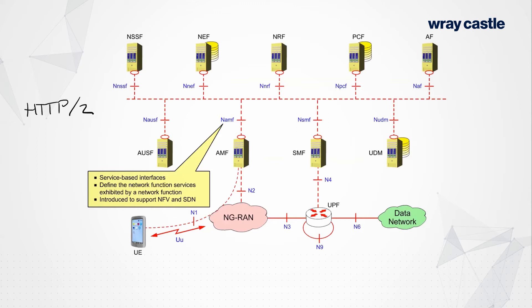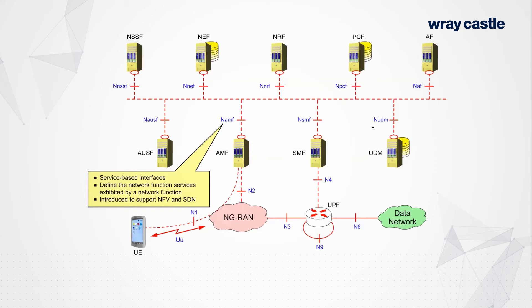Hypertext Transfer Protocol is a convenient and simple way of moving information around. A client can request a piece of information from a server. When you click a link in a web browser, your browser sends an HTTP GET message to the server, which finds the content and delivers it. Similarly, if the AMF needs subscriber information, we can use a client-server model where the AMF acts as client and the UDM acts as server — the AMF sends an HTTP GET request to the UDM for subscriber information.